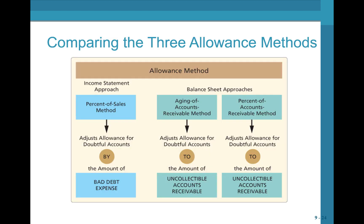To summarize: in the income statement approach (percentage of sales method), we start by calculating the bad debt expense and then adjust the allowance for doubtful accounts by that amount. In the balance sheet approaches, we determine what the allowance for doubtful accounts should be, adjust it to the expected uncollectible amount, and the bad debt expense is the plug — worked out backwards from what we expect to be uncollectible.